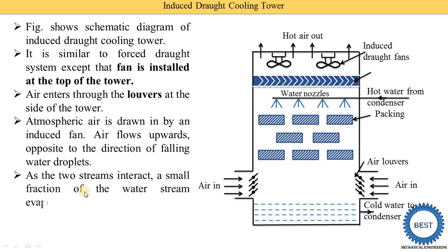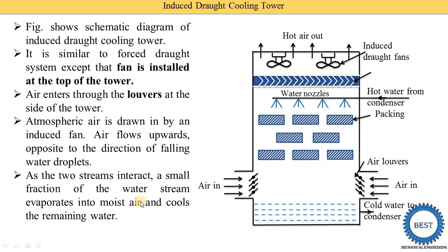As the two streams interact — water as one stream and air as the other — a small fraction of the water stream evaporates into the moist air and cools the remaining water. When the water and air come into contact with each other, some quantity of the water evaporates. Due to this evaporation, the water is cooled, and the cold water is collected at the bottom of the cooling tower.